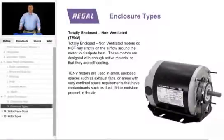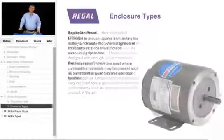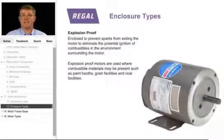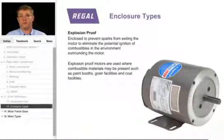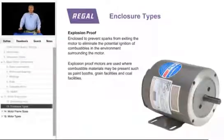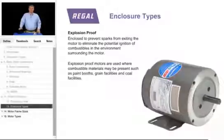The last type of enclosure we talk about is explosion proof. This type of motor must contain a spark inside the motor to not allow any flammable or combustible materials to explode or catch fire. These applications we typically see in paint booths, grain facilities, coal facilities, where any combustible material may be present around the motor.